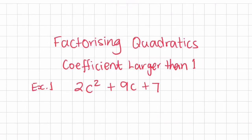In this video, we are going to factorize quadratic expressions which have coefficients larger than 1. What do we mean by coefficient larger than 1? If the expression has been written in the form ax² + bx + c, then this number here, the value of a, is larger than 1.